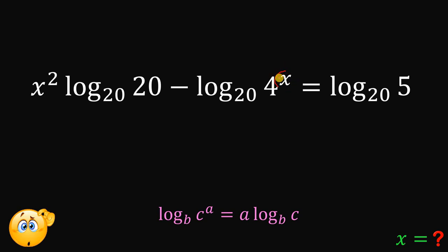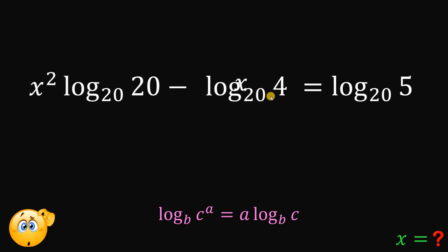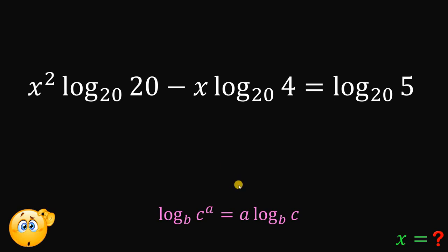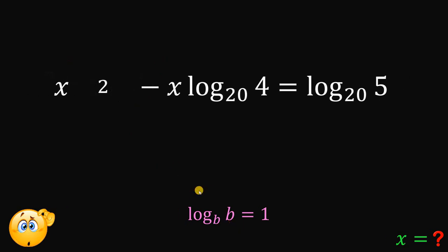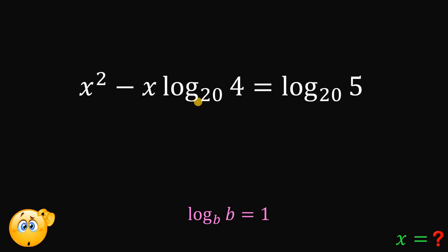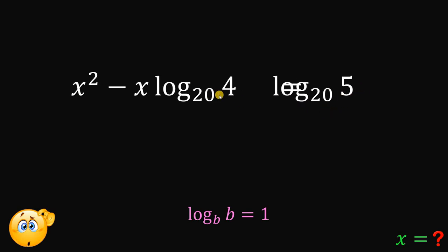Another identity we can use is that logarithm of b to the base b — where the argument and base are the same — equals 1. So logarithm of 20 to the base 20 equals 1. This gives us x squared minus x times logarithm of 4 to the base 20 equals logarithm of 5 to the base 20. Now let's move everything to one side and equate to 0.